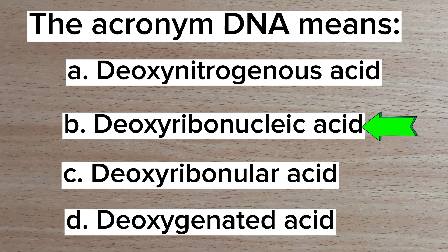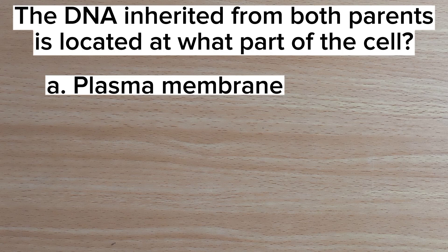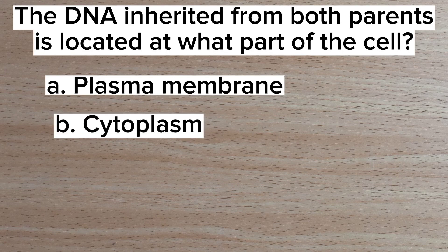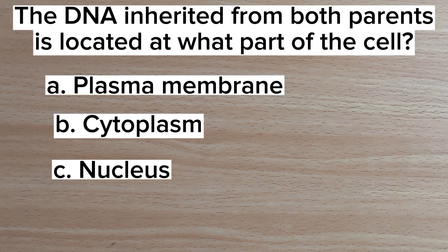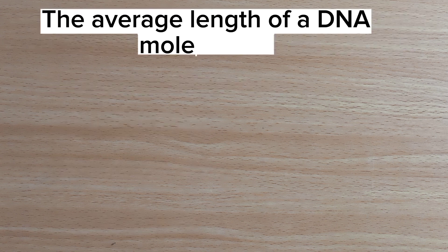Answer: B. Deoxyribonucleic acid. Number two: the DNA inherited from both parents is located at what part of the cell? A. Plasma membrane, B. Cytoplasm, C. Nucleus, D. Nucleolus. Answer: C. Nucleus.